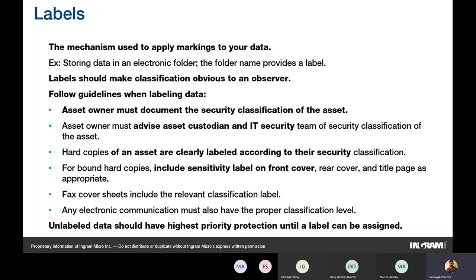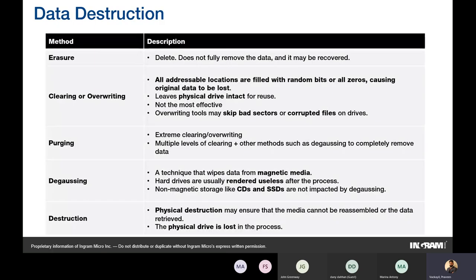Labels are the mechanisms used to mark your data. Labels should make the classification very obvious to the observer — not something the custodian has to search for. The asset owner documents the security classification and advises the IT security team. Hard copies should be clearly labeled on front and rear covers. Fax sheets and emails or electronic communications should also carry the proper classification, using digital rights management (DRM) or DLP tools for soft copies. Unlabeled data should be treated with the highest sensitivity level until a label can be assigned — security by default.